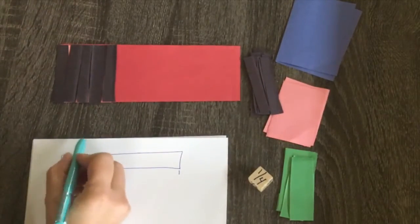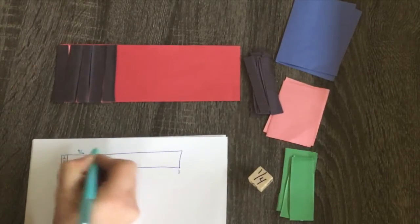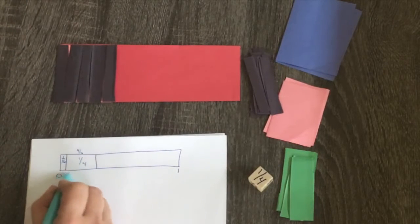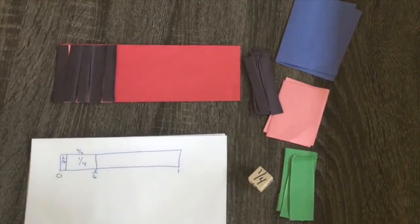And they see that one fourth is the same as having four sixteenths. And they are now five sixteenths along the path.